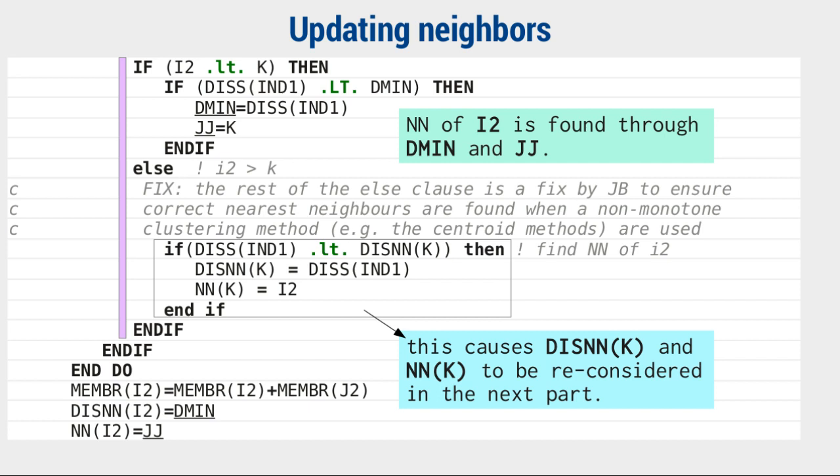During this work, the nearest neighbor of i2, the new complex, is being determined via the variables dmin and jj. What humorous names. Furthermore, this conditional clause is fused with subtly different work of updating the nearest neighbor of k, the third party. Or not. The actual role of this part is to make k subject to a nearest neighbor check, which occurs in a separate loop.